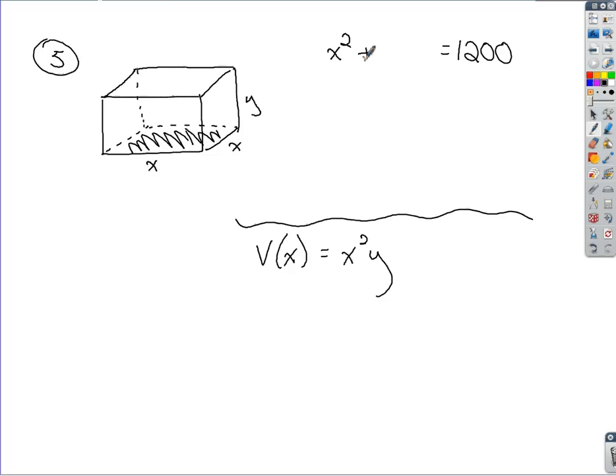So we've got four sides because we know the top's open, right? Don't have to worry about that. With four sides, the area of those four sides are all going to be the same, right? It's all going to be x times y. So since you have four of those, if we tack that on to the area of the base, that would give us that 1,200 square centimeters we can play with.